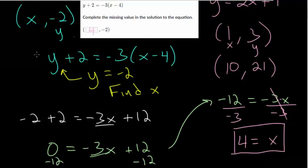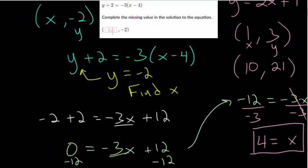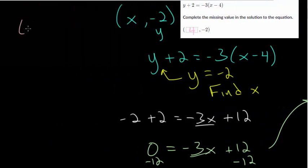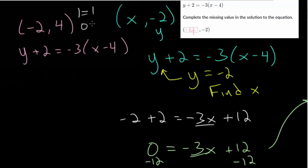Now, you can check this by plugging in both numbers at the same time. And it should evaluate to something that's true. So we think that the solution is at minus 2 comma 4. So if we just plug both those in to the equation, y plus 2 is minus 3 times x minus 4. It should evaluate to something that's always true. Like either 1 equals 1 or 0 equals 0.